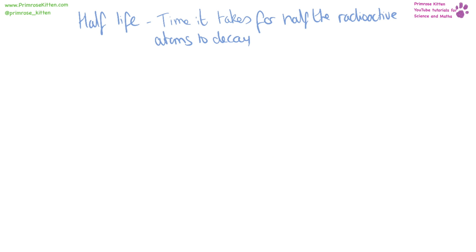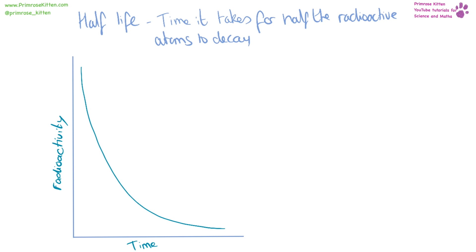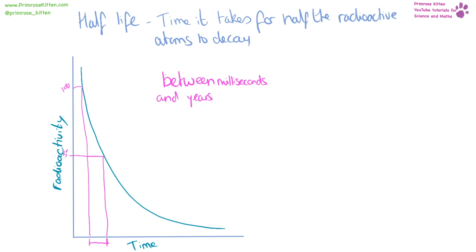A half-life is the time it takes for half the radioactive atoms to decay into something else. We can read this from a graph: take 100% activity, read across and down; then take 50%, read across and down. The time between 100% activity and 50% activity is the half-life. Half-lives can range from milliseconds to hundreds of thousands of years.